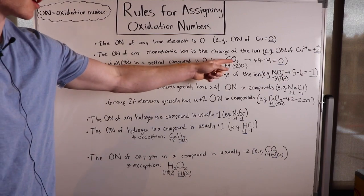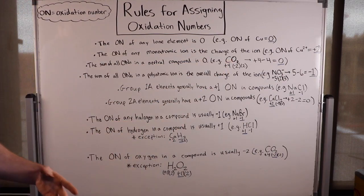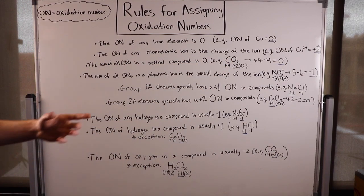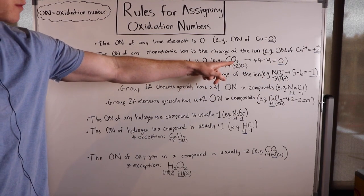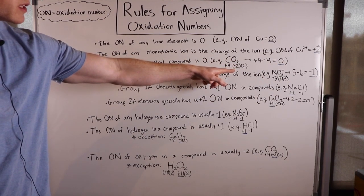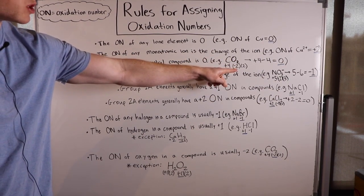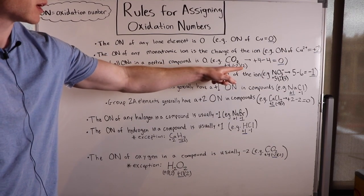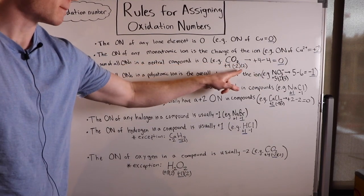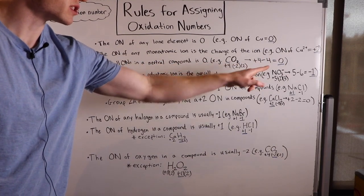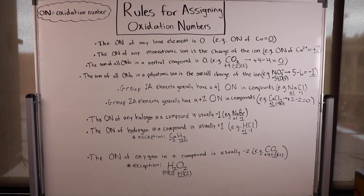For example, CO2 — carbon dioxide — is a neutral compound. The oxidation number of the carbon is plus four, while the oxidation number of oxygen is negative two for each oxygen, times two of them. So plus four minus four is zero, which is the overall charge of the neutral compound.